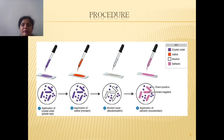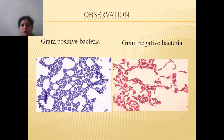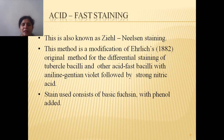Then give the treatment of decolorizer — wash your slide with alcohol until the purple color stops coming out from the bacterial cell. Then wash the slide with water and apply the secondary counter stain safranin, allowing it to react for five minutes. Wash the slide with tap water, air dry it, and observe under the oil immersion objective. Gram-positive bacteria retain the violet color and appear violet, while gram-negative bacteria take up the counter stain and appear pink in color.